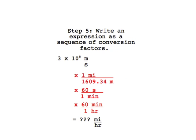Step 5: Write an expression as a sequence of conversion factors. Generally, the skill comes from learning which unit to put in the numerator and which in the denominator. The trick is to always put the unit you are converting out of in the opposite of where it currently rests in the problem.